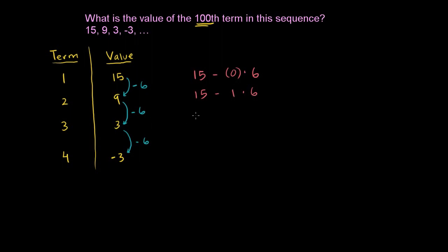Now what's happening here? This is 15 minus 2 times 6. We're subtracting 6 twice. What's the fourth term? This is 15 minus 3 times 6. We're subtracting the 6 three times from the 15.